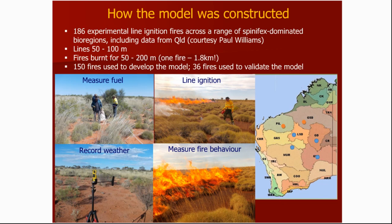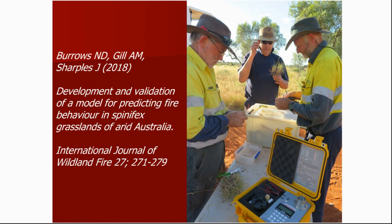It's fairly standard procedure. We go out, find an area to do the experimental fires that we can contain, do ground measurements of the fuel cover, patchiness, biomass or fuel load, and fuel moisture content. We light the fires, record the weather and fire behaviour, and crunch all those data through various statistical packages to come up with a predictive model. There's much more detail about the methodologies in a recently published paper that I co-authored with Malcolm Gill and Jason Sharples. If you're interested in following the detail of how we constructed and analysed the model, its accuracy, I'd refer you to that paper.